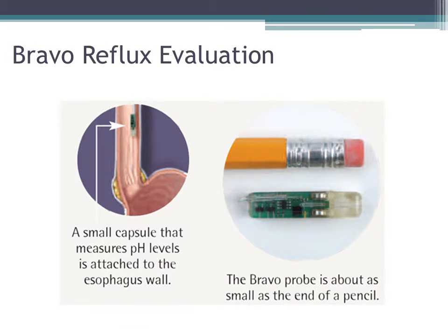An alternate way to determine whether there is significant reflux is with a procedure called a Bravo reflux evaluation. In this study, a gastroenterologist will place a small capsule at the level of your esophagus and stomach opening. This small capsule will send pH messages to a cell phone-sized device that you wear on your belt. After approximately 24 to 36 hours, the capsule automatically releases and is evacuated in your stools. Although not as invasive as having a tube in your nose, this study does require sedation and a gastroenterologist to place the capsule.